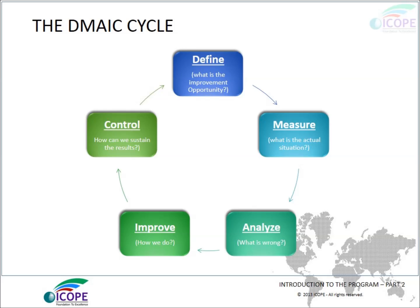The DMAIC cycle, sometimes referred to as the DMAX cycle, has five phases in any Six Sigma project: Define the project and the opportunity; Measure how bad or how good the situation is; Analyze the situation; Improve the situation using particular improvement tools; and Control the situation to keep results sustained.